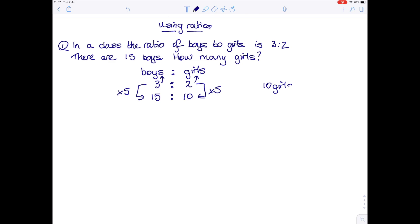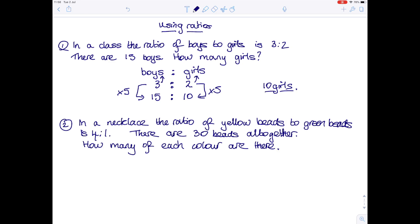Example 2: in a necklace, the ratio of yellow beads to green beads is 4 to 1. There are 30 beads altogether. How many of each color are there? This is slightly different in that you are given the total amount of beads, but you start off in the same way.